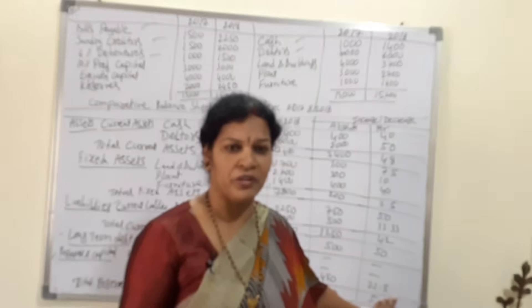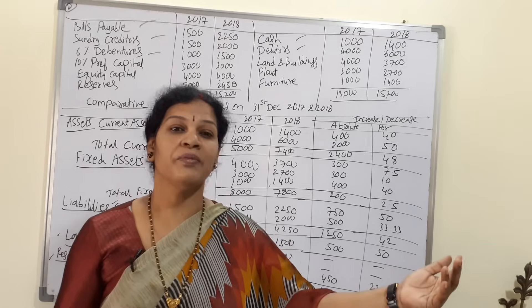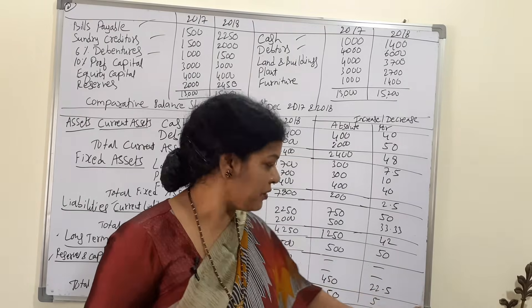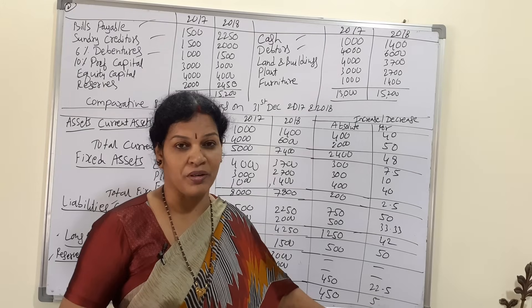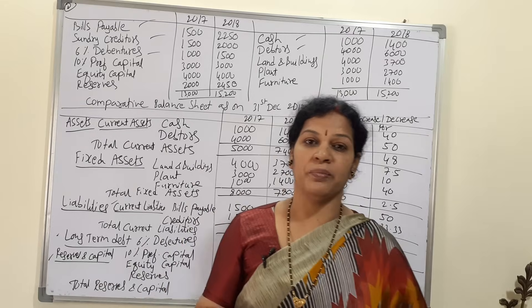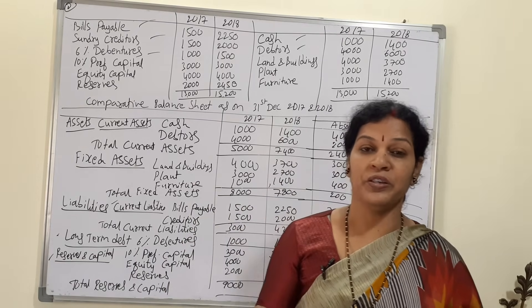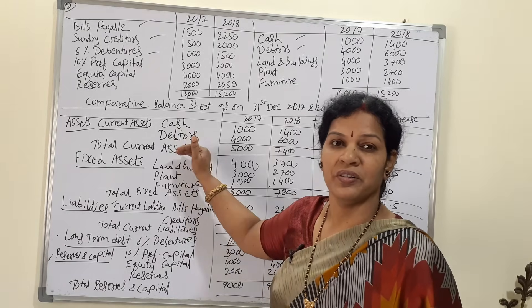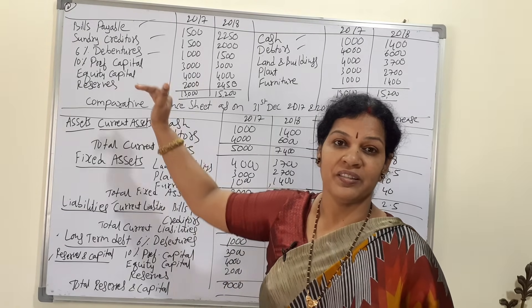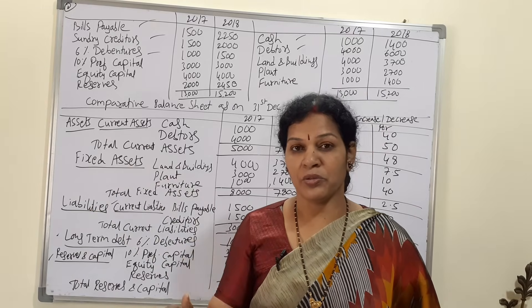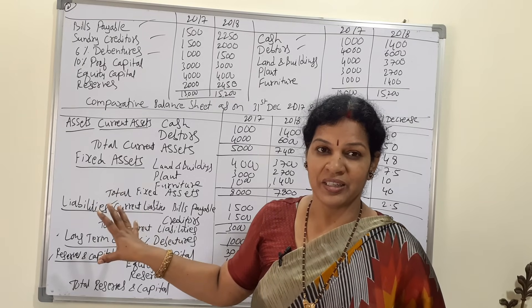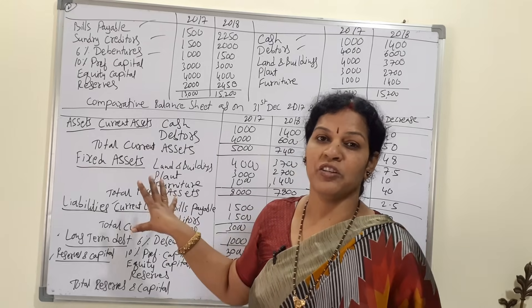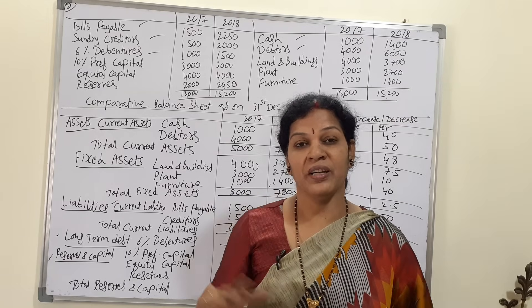Reserves are increasing by 22.5% — not a very high amount like 50% or 40%, but it is still a good sign for the organization. Overall, the company's financial position is satisfactory: current assets are good, current liabilities are also increasing but less than current assets, reserves are increasing, and debentures are increasing — all of which are good signs. Overall the company's financial position is good.